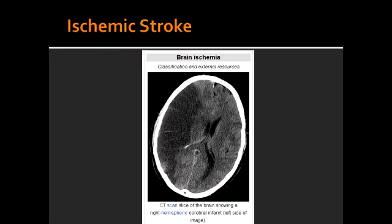What is the cause of ischemic stroke? Ischemic stroke occurs due to atherosclerotic emboli which block the large vessels. The etiology of large vessel blockage includes atrial fibrillation, carotid dissection, patent foramen ovale, and endocarditis.